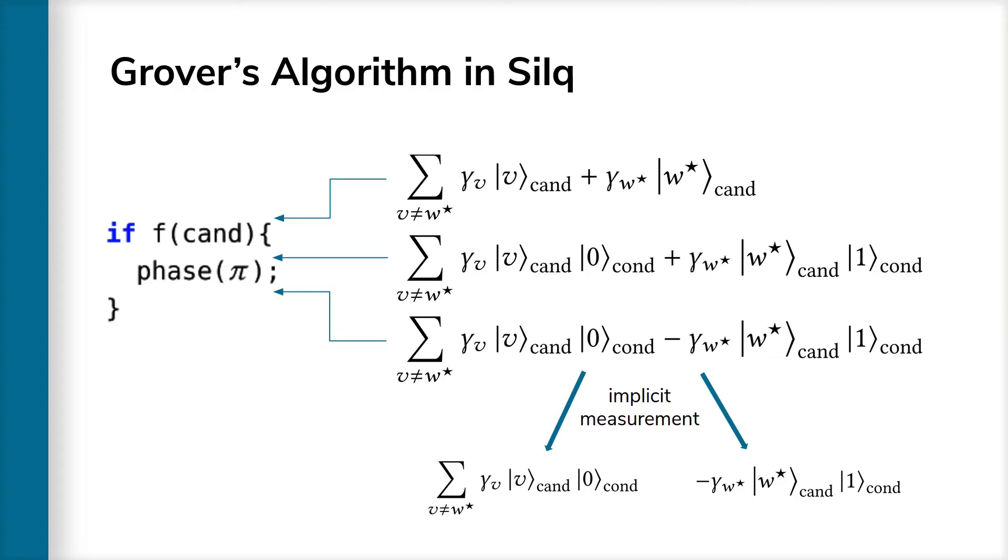Unfortunately, if we do this in existing languages, the laws of quantum physics introduce an implicit measurement, meaning that the state collapses to one of the states shown below. If you think that this is unintuitive and makes no sense, then we agree. This is not what the programmer should expect to happen.